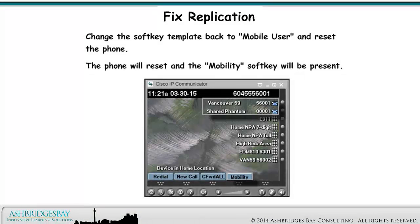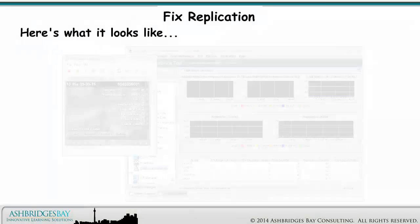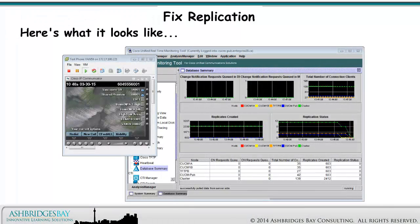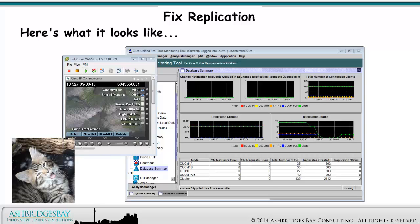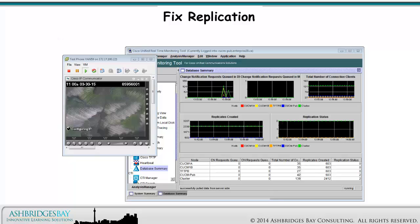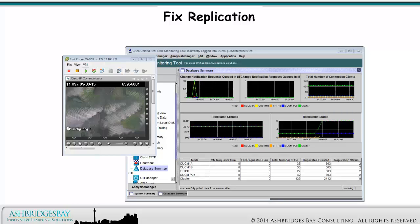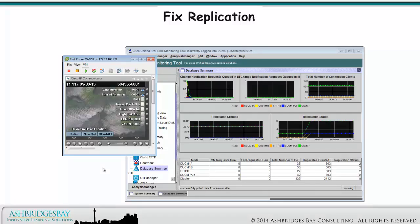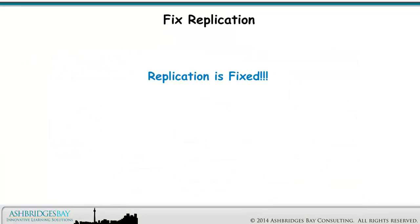Vancouver 59 56001 registers and the Mobility Softkey vanishes from the phone. Change the Softkey template back to Mobile User and reset the phone. The phone will reset and the Mobility Softkey will be present. We've sped it up considerably so as not to bore you to death. Replication is fixed! Hooray!